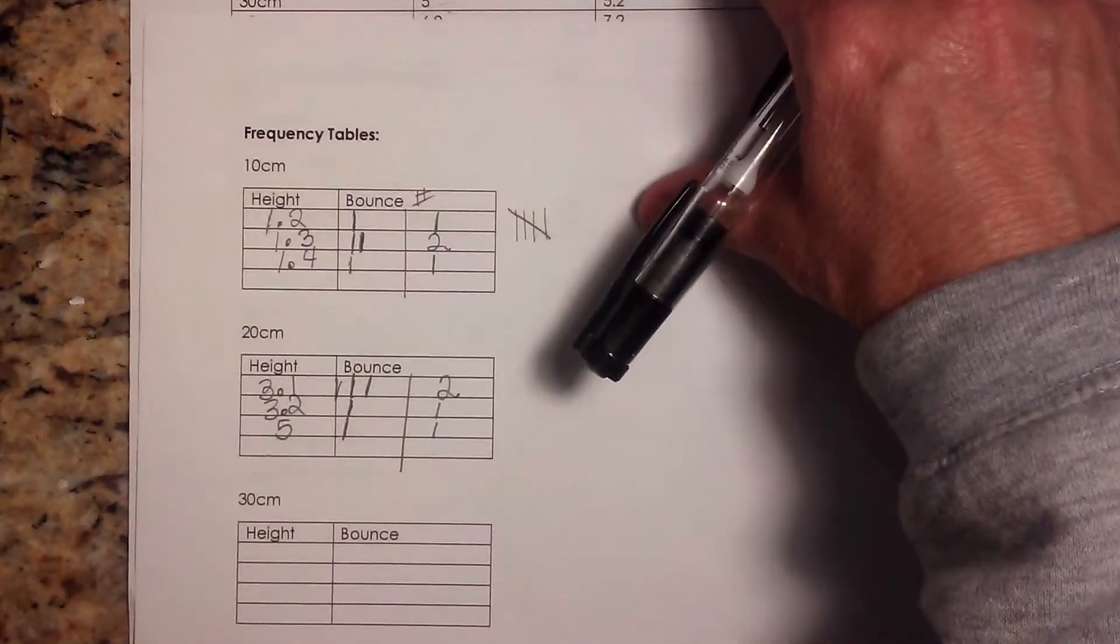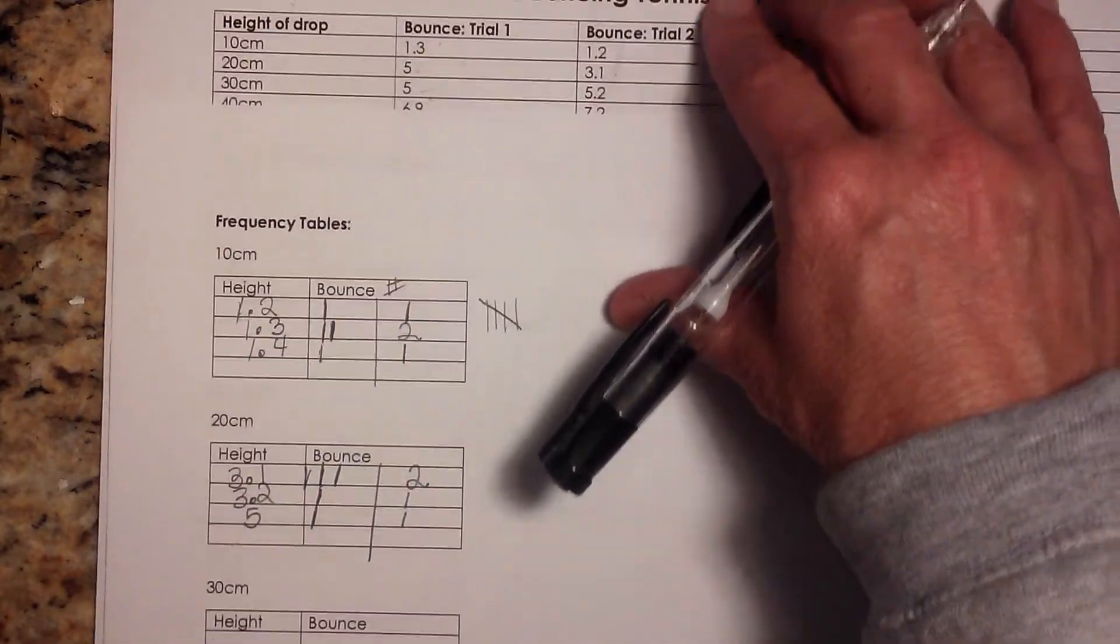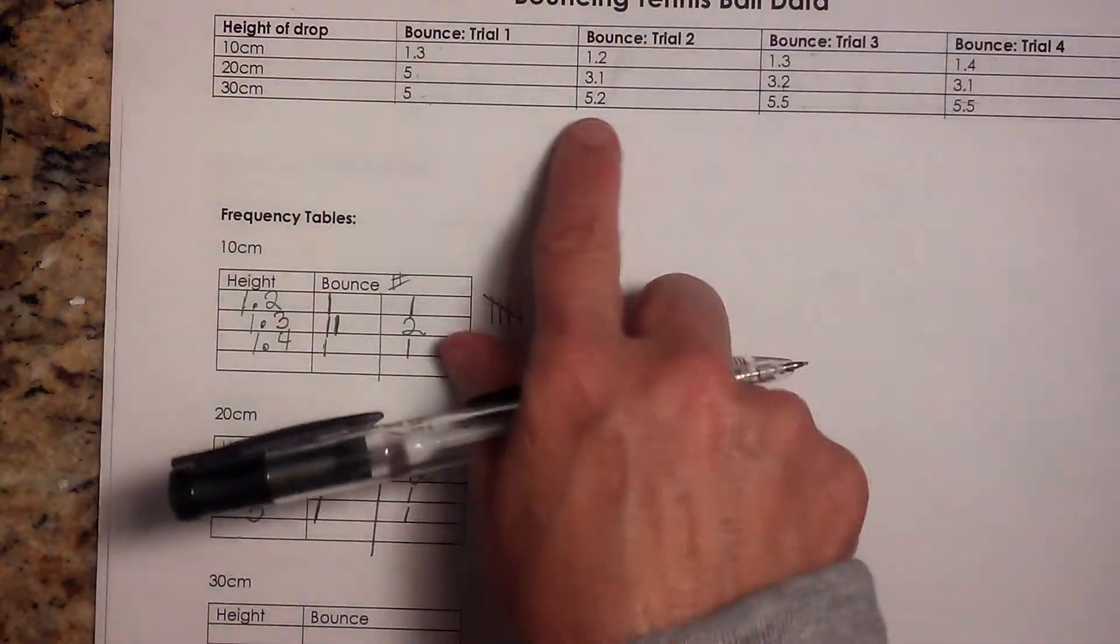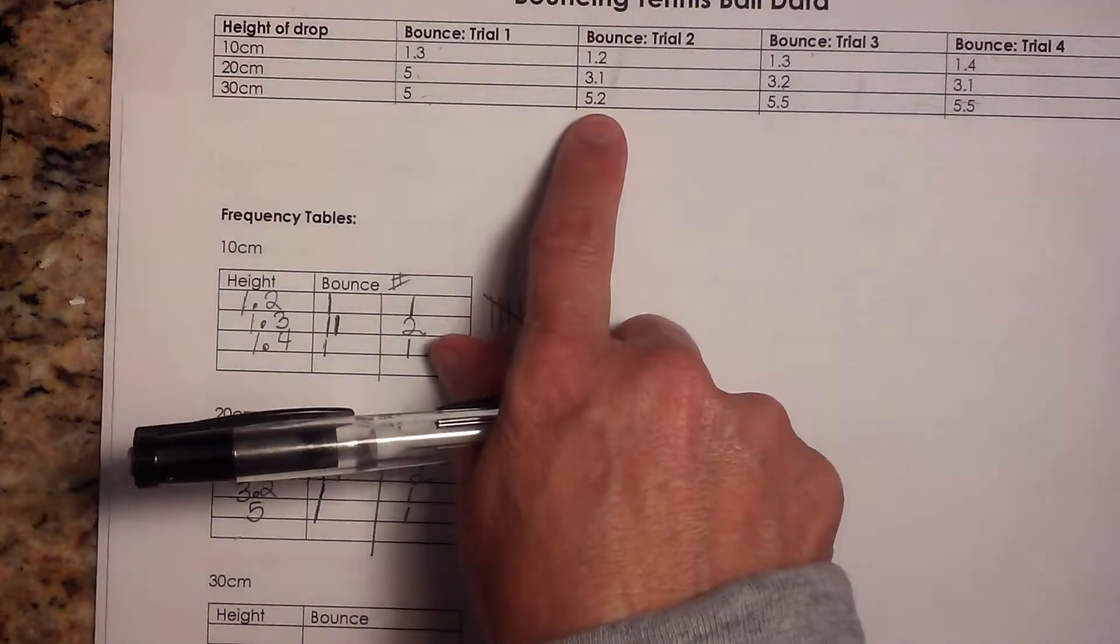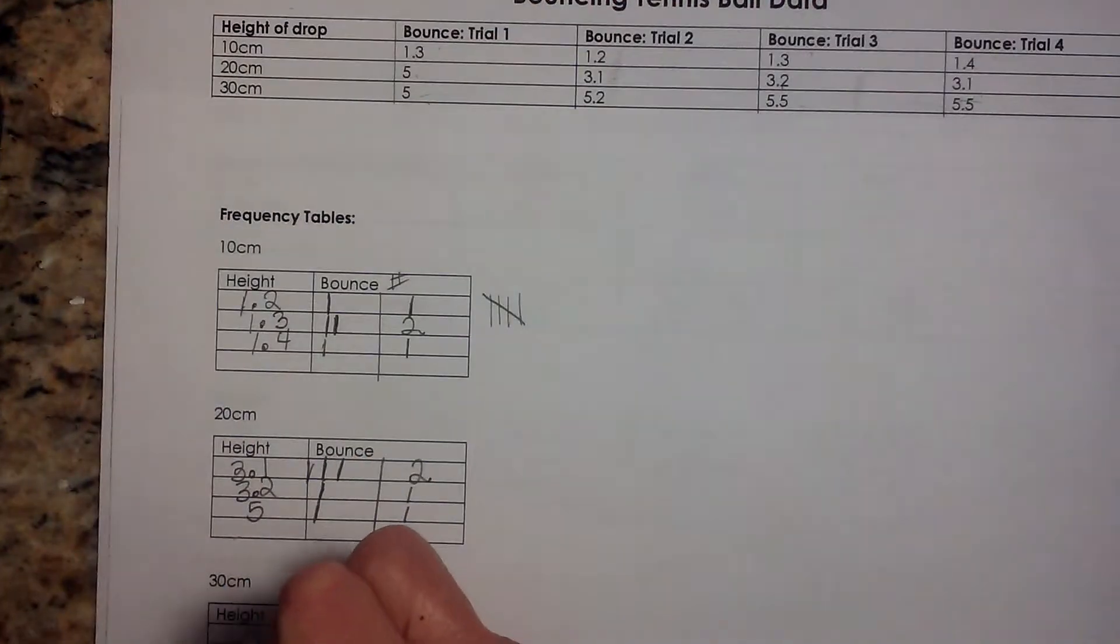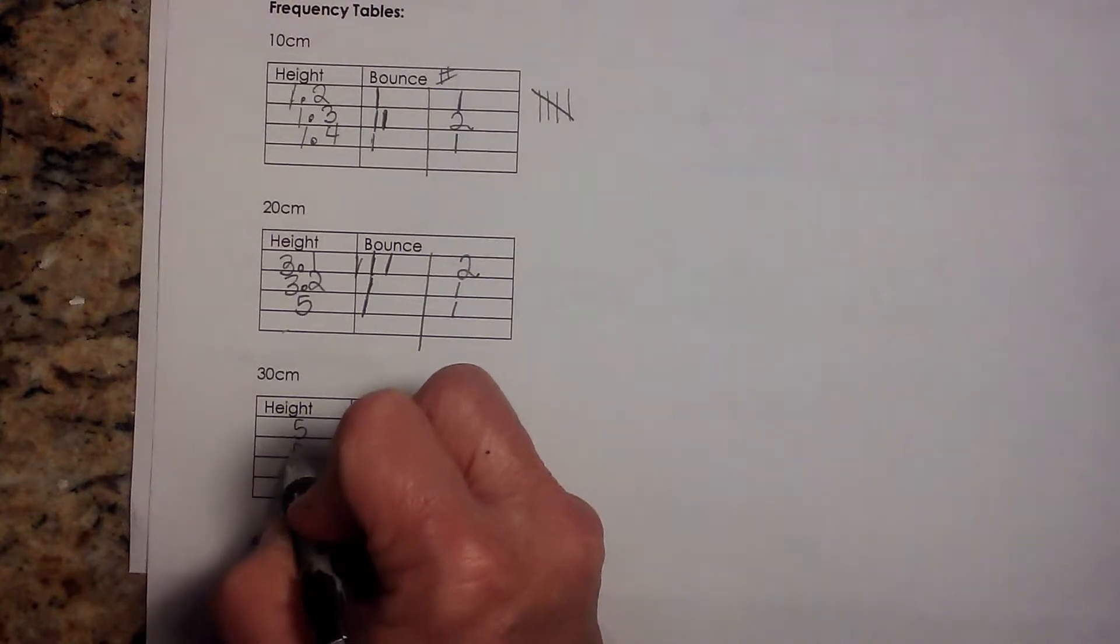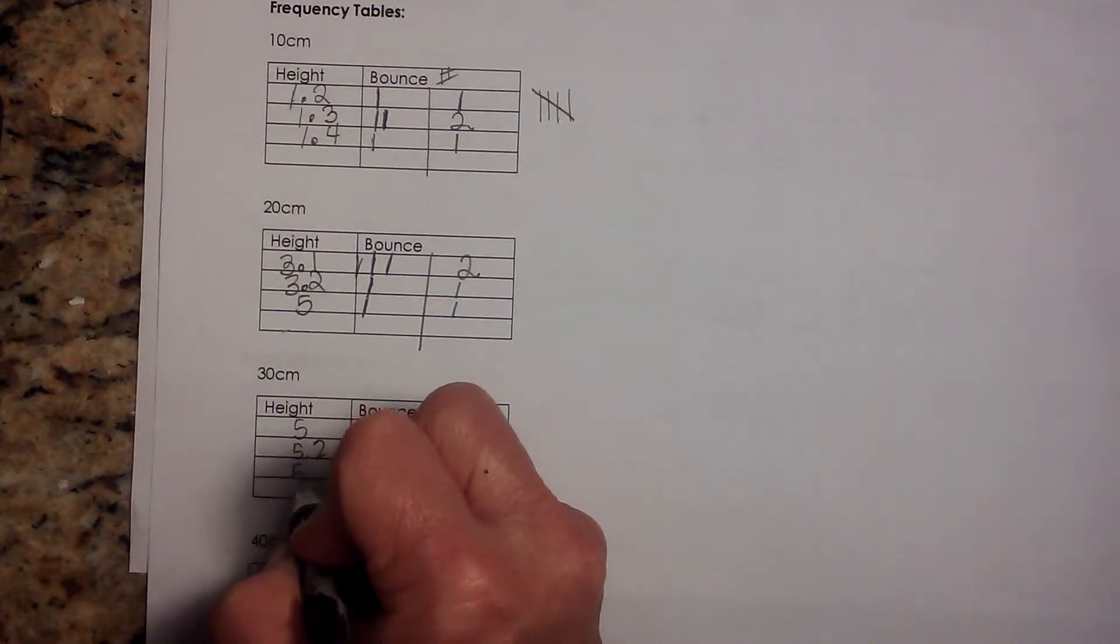OK, I'm going to do the same thing for 30. OK, 30. If you can see it right, I'm going to keep it on the screen for you. 5.5 is my smallest, then 5.2 and then 5.5. So I'm going to go down here and do 5, 5.2 and 5.5.